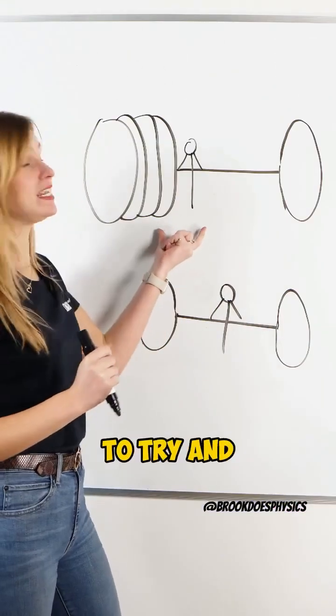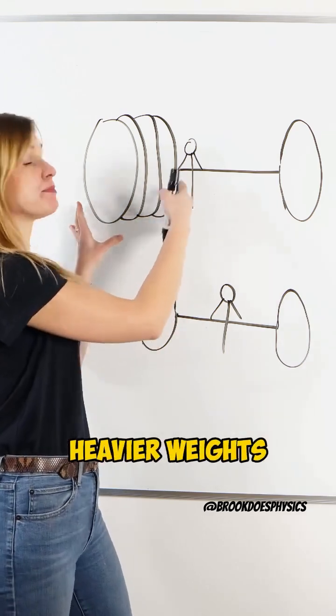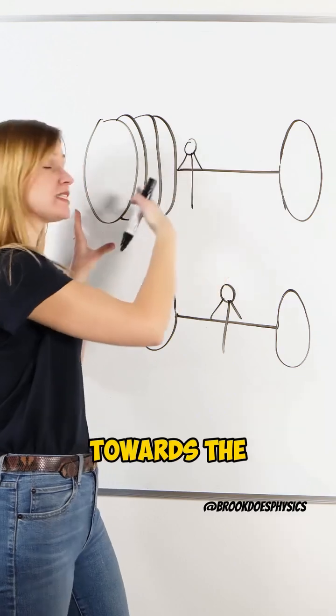Most people correctly figured out if you want to try and lift it, they need to be towards the heavier side of the weights, because the heavier weights pull the center of mass towards the heavier side.